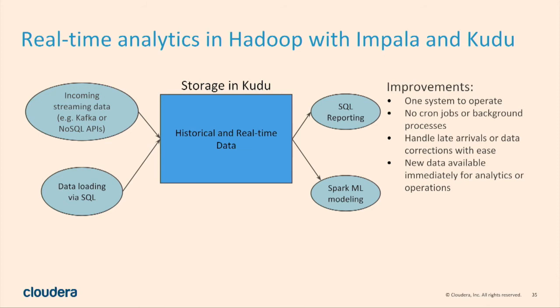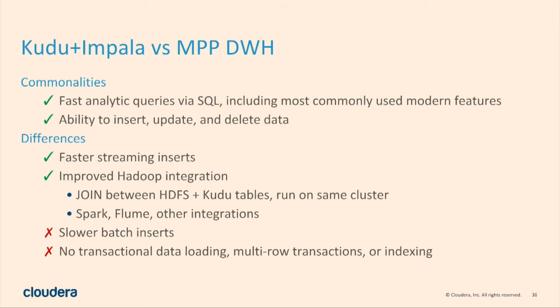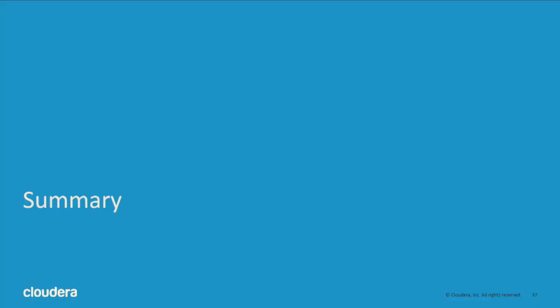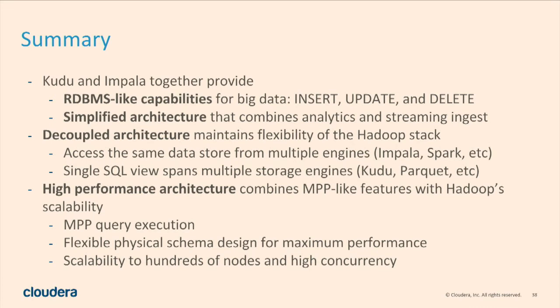With Impala and Kudu this is much simpler: all your historical and real-time data is in the same place, data arrives and you just insert it, you run a query and it's there — no management, no multiple interacting systems. Compared to MPP data warehouses, we support all the arbitrary SQL you're used to, insert, update, and delete. We do streaming inserts much better and have much better Hadoop integration. The downside is we're not as good at bulk load scenarios, but we're working on that. Kudu and Impala together provide RDBMS-like capabilities with simplified architecture, Hadoop's flexibility, MPP usability, and the scalability of a big data ecosystem.